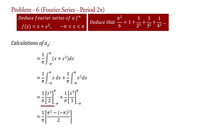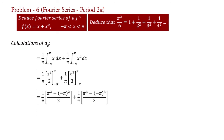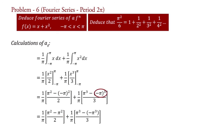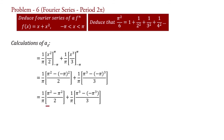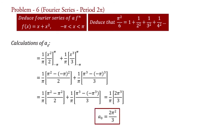By integrating: a₀ = (1/π)·[x²/2] from −π to π + (1/π)·[x³/3] from −π to π. Substituting the upper and lower limits: the first bracket gives π² − (−π²)/2 = 0, and the second gives π³ − (−π³)/3 = 2π³/3. Therefore, a₀ = (1/π)·(2π³/3), and after cancellation, a₀ = 2π²/3. This is the Fourier coefficient a₀.